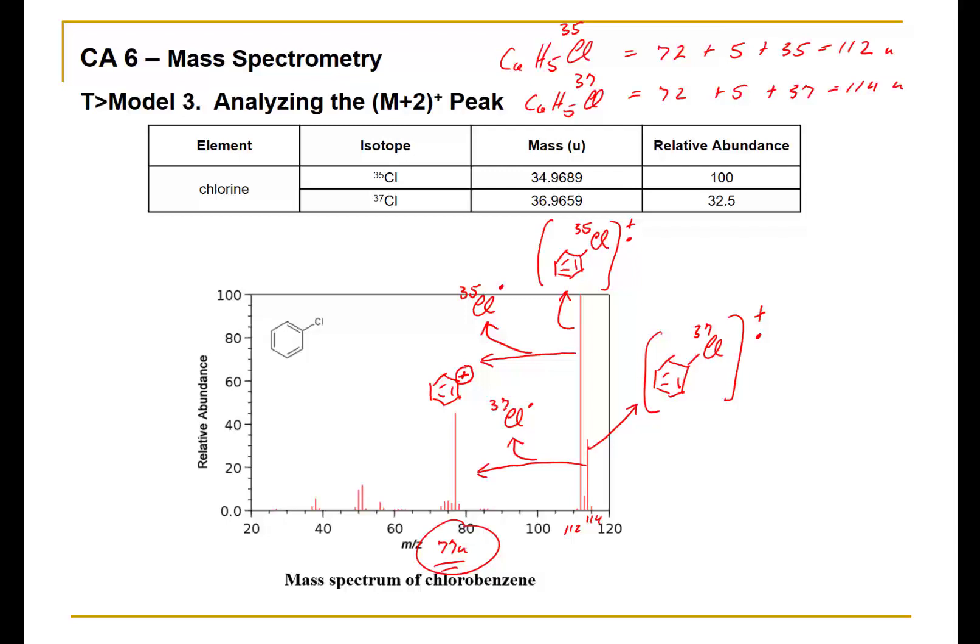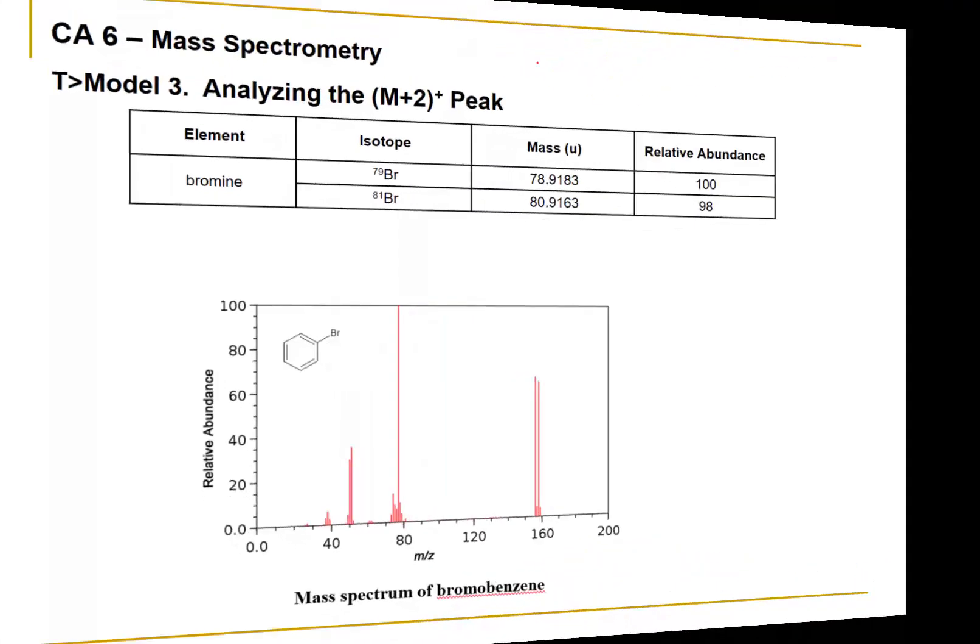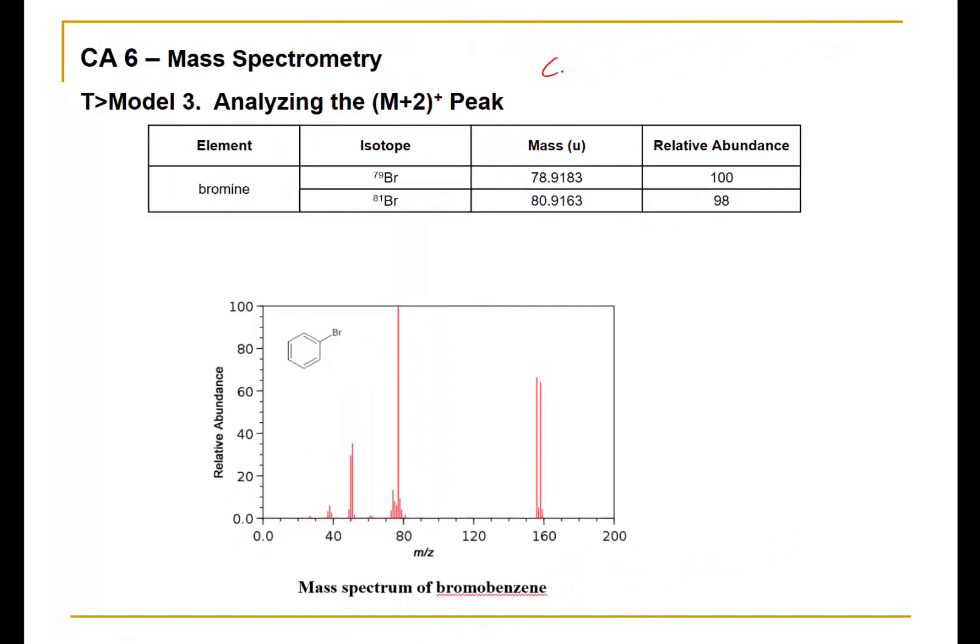We can do a similar analysis with bromobenzene. I'll start with the molecular formula: C6H5Br, with Br79 initially. 72 atomic mass units plus 5 plus 79 equals 156. The other mass corresponds to C6H5Br81: 72 plus 5 plus 81, which equals 158 atomic mass units.